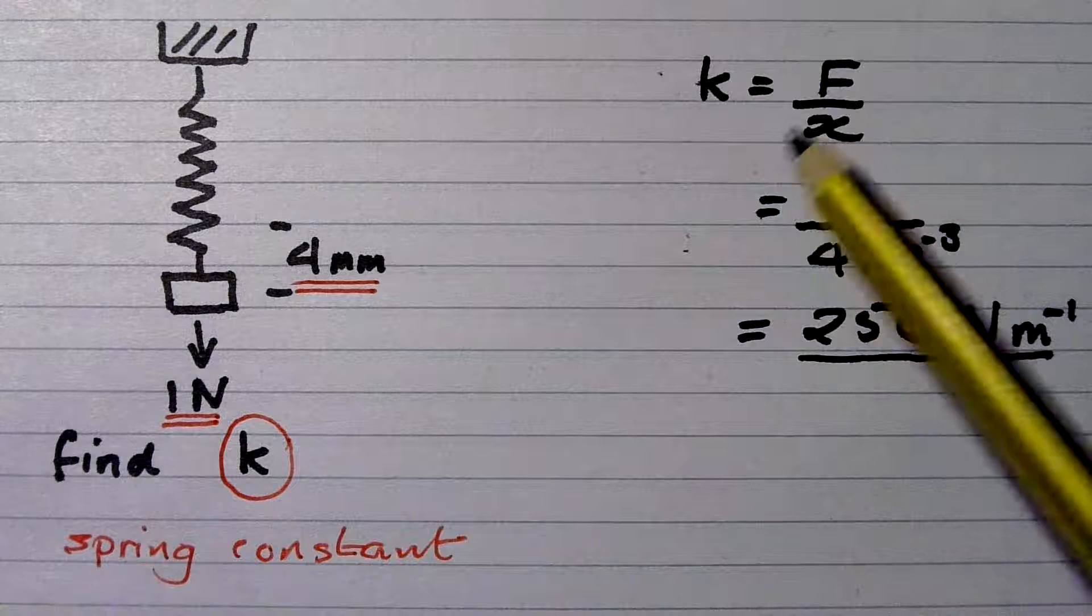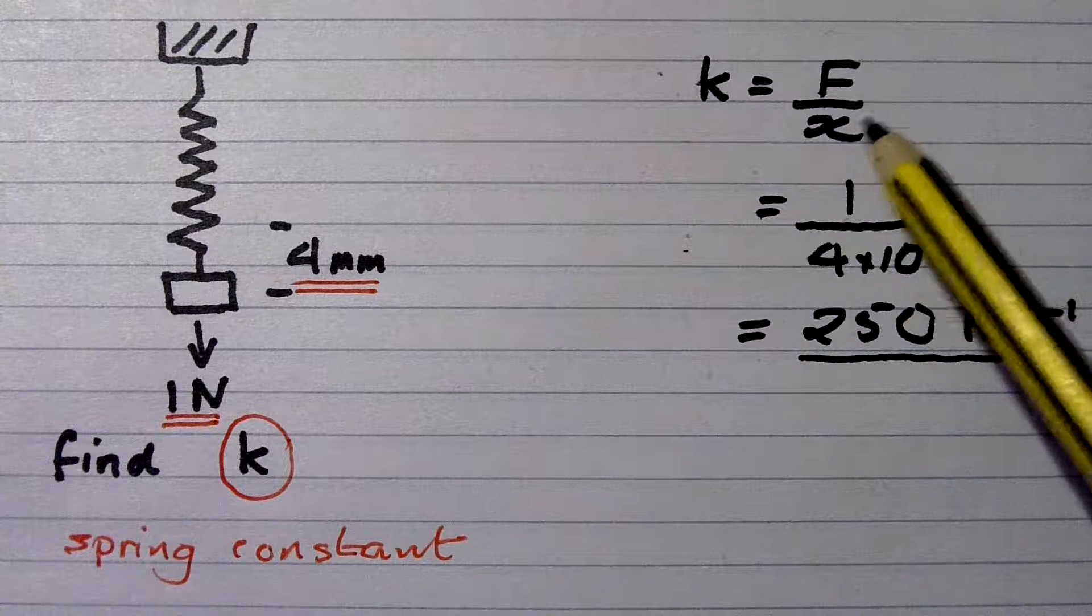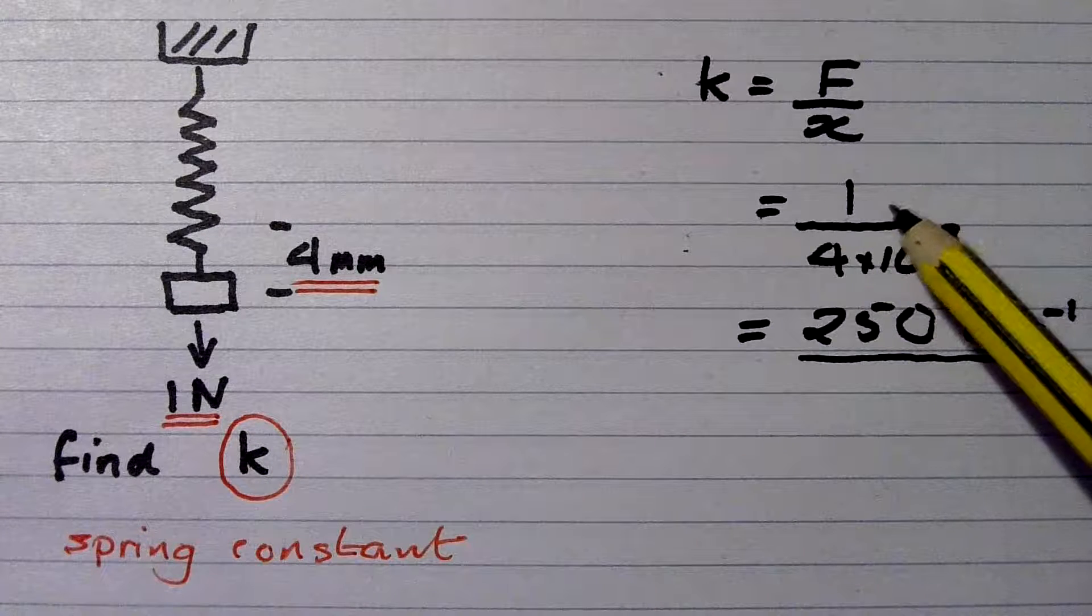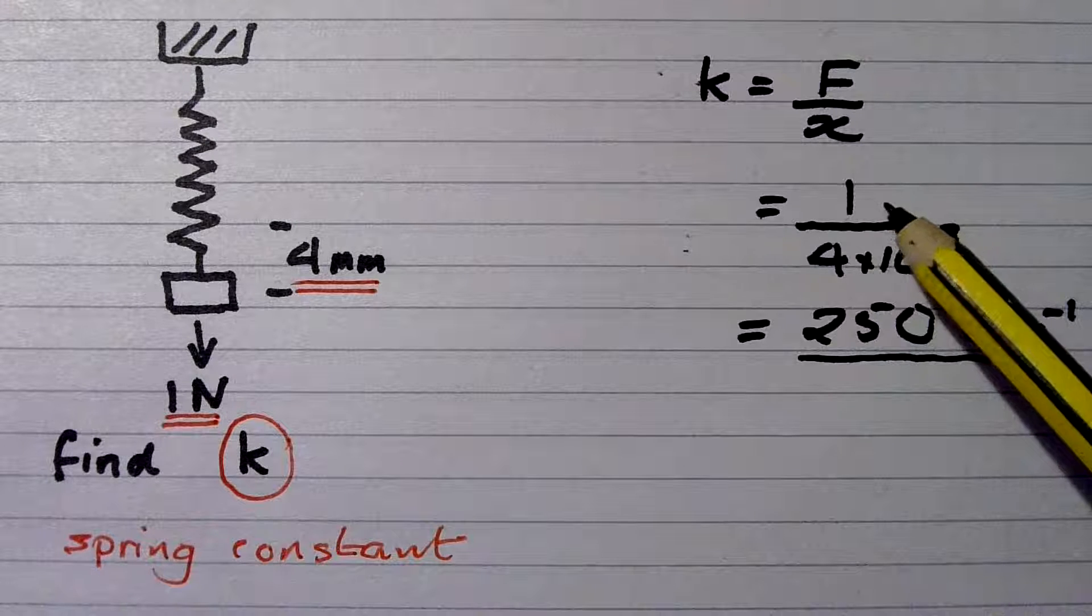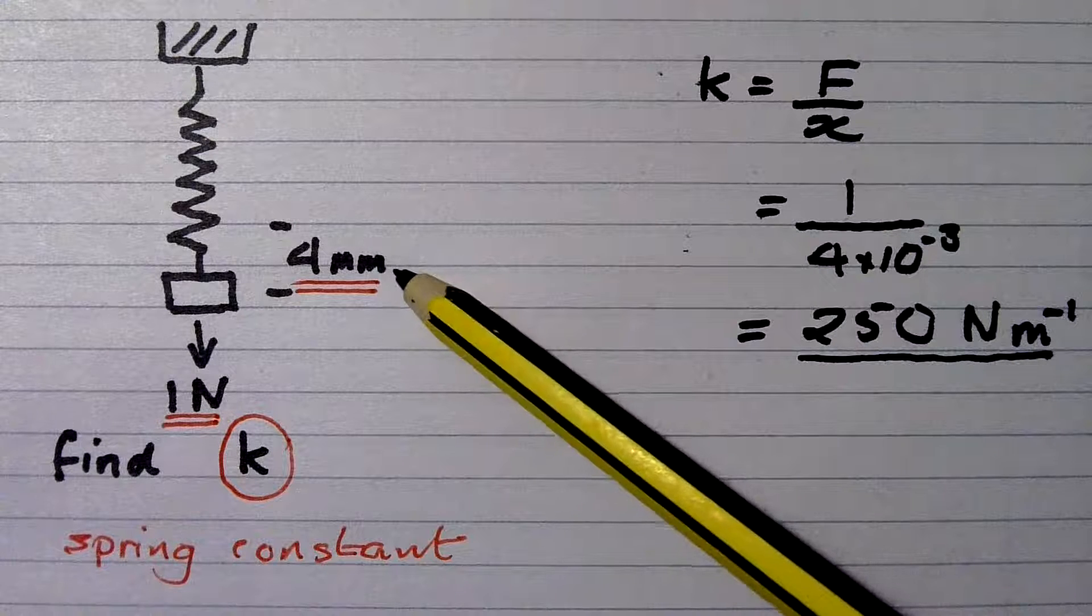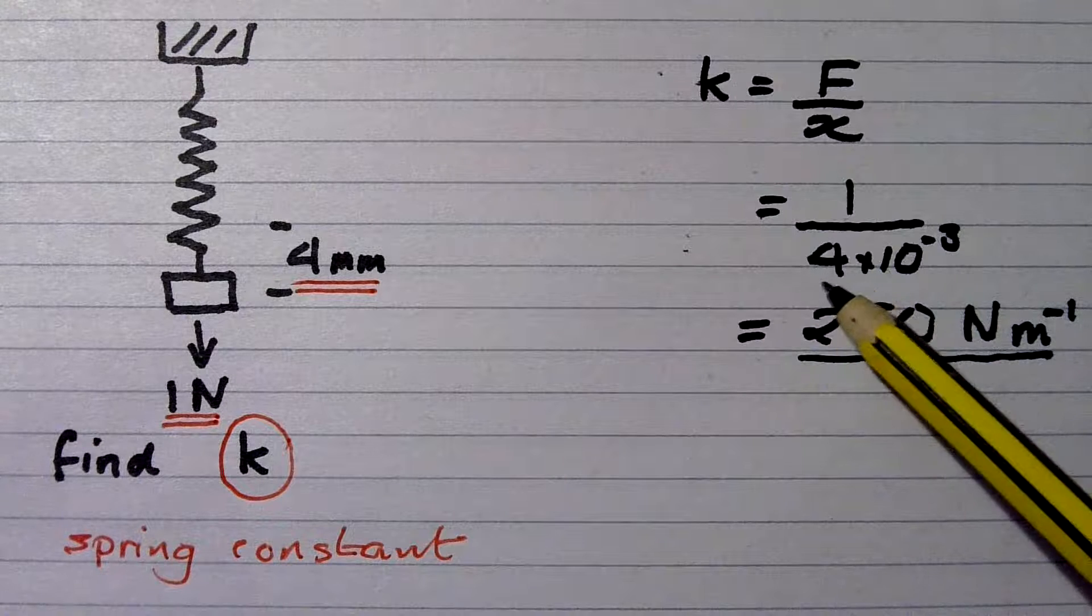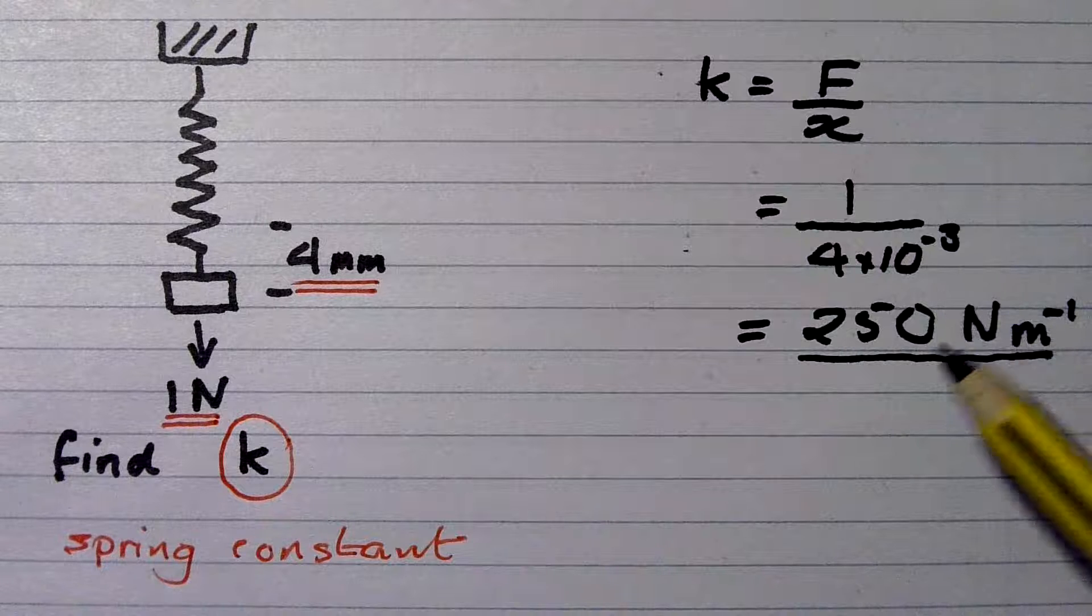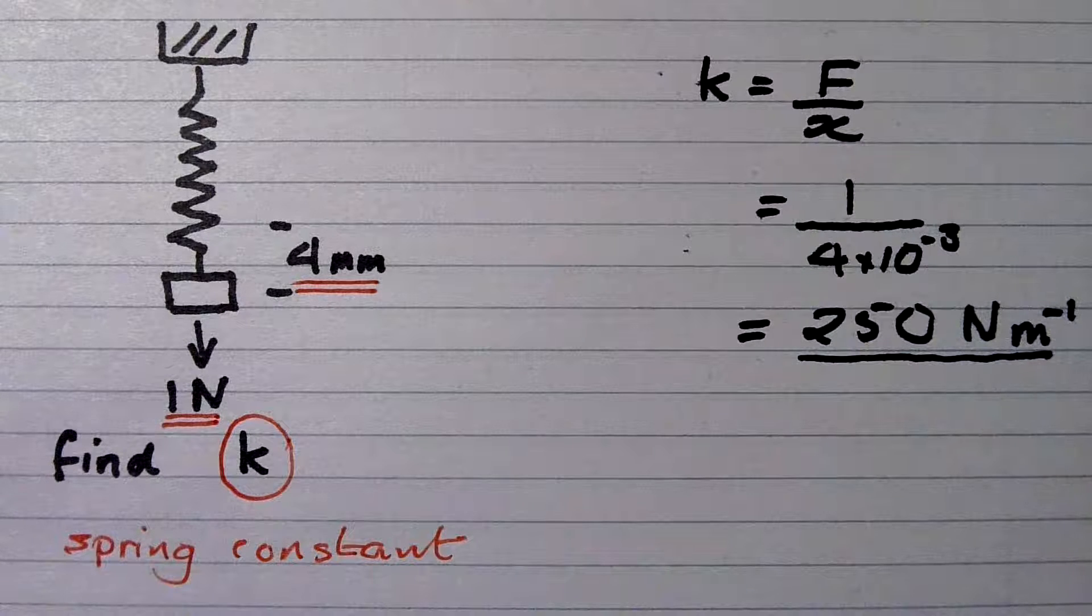So here's our formula, k equals F over x. F is, of course, the weight. So putting numbers in, it's 1 divided by x. x is here, it's the extension, and we need it in metres. So it's 4 times 10 to the negative 3. And when you work that through, the answer is 250 newtons per metre.